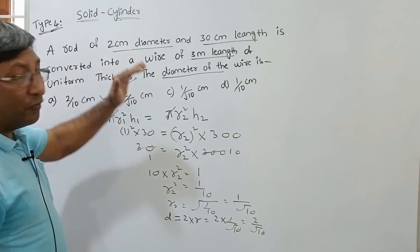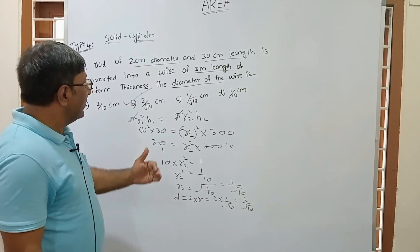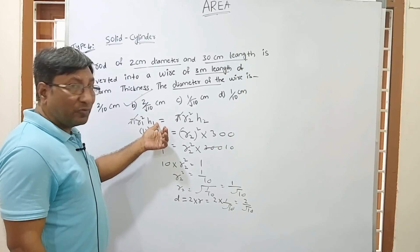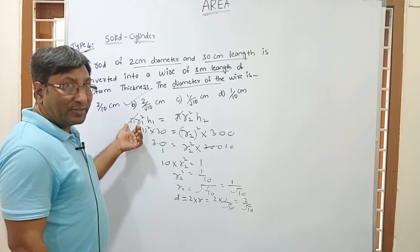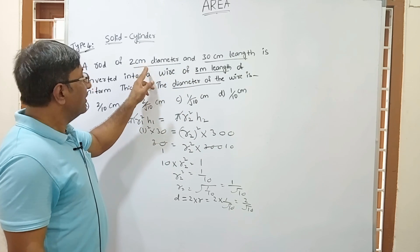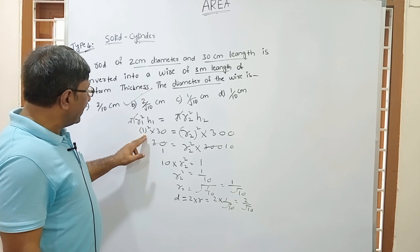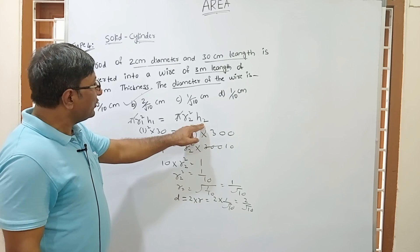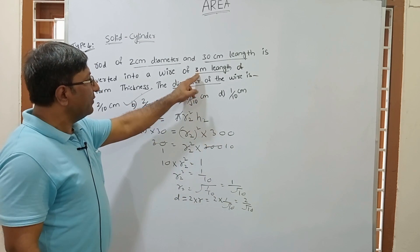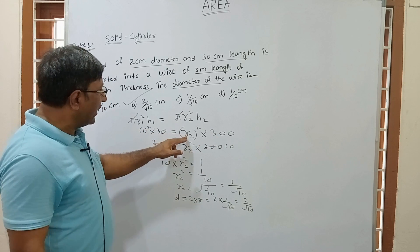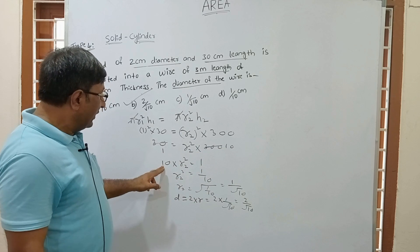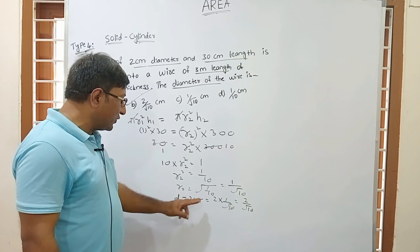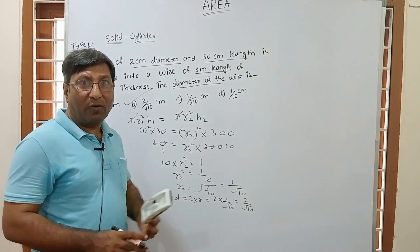For this type of question, the simple technique is: volume of cylinder 1 equals volume of cylinder 2. Volume = πR²H. So πR₁²H₁ = πR₂²H₂, π cancels. R₁ = 1 (since diameter = 2), H₁ = 30, H₂ = 300 cm. Solving gives R₂ = 1/√10, so diameter d = 2/√10. In this way we can solve all such questions.